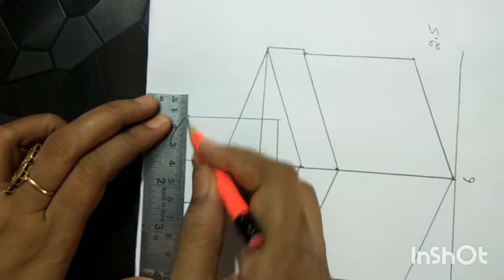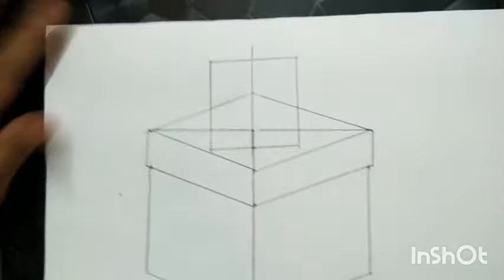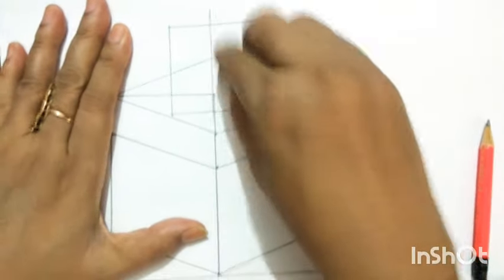Draw a square of 5 centimeters for the apple. Erase the extra lines in the box.